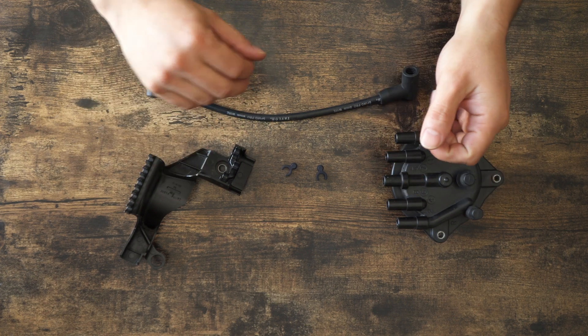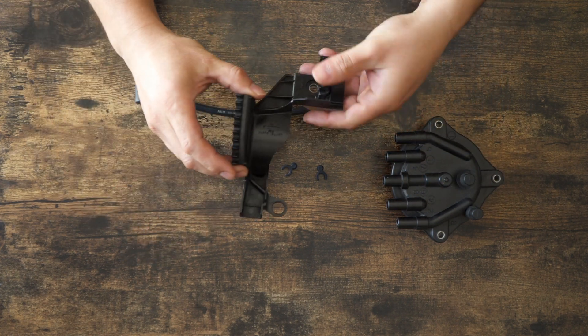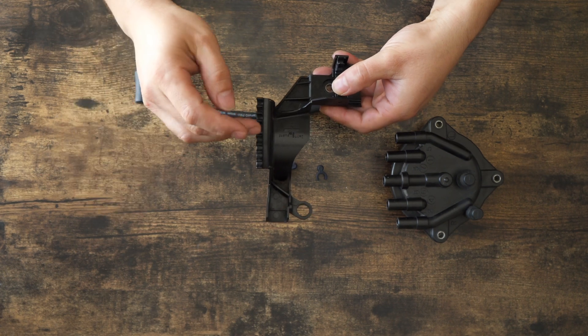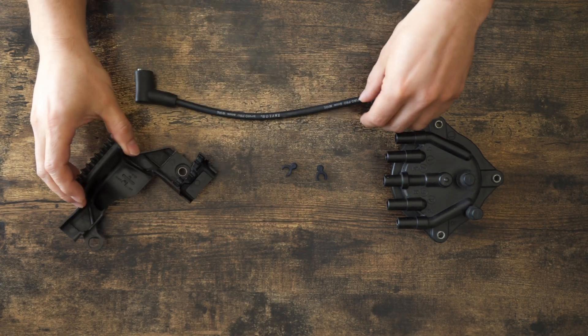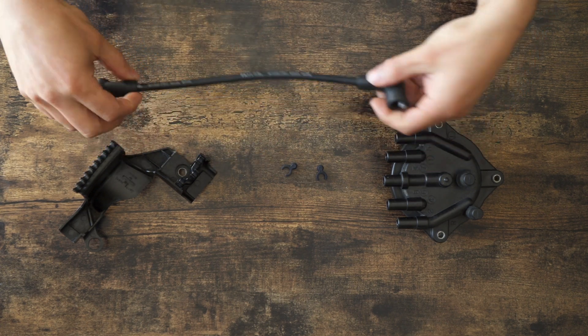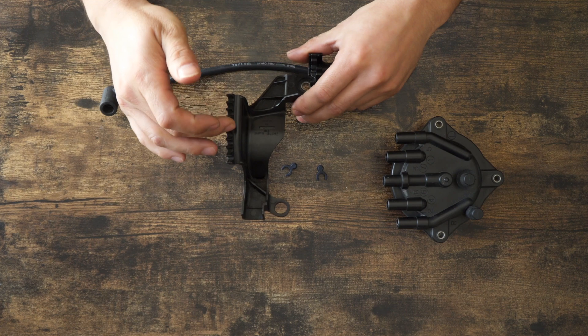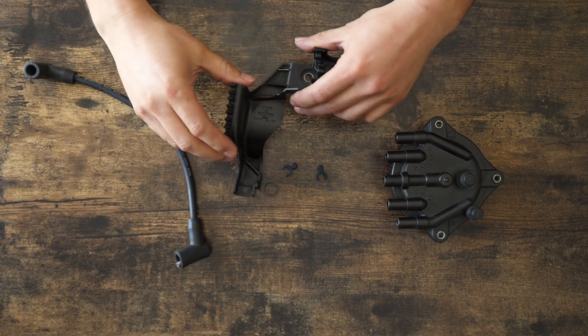Once you have the assembly bolted onto the engine, we got to do some spark plug wire management. Usually the OEM spark plug is a five millimeter spark plug wire that can go directly into this slot. However, we now have an eight millimeter cable that now needs to be properly handled and taken care of so that way it doesn't go all over the place.